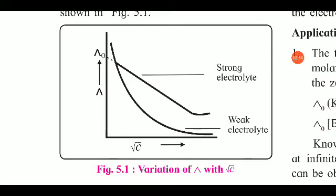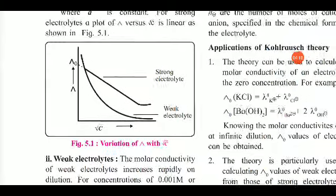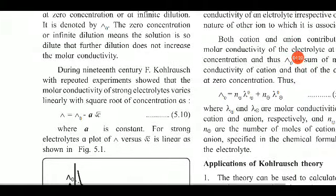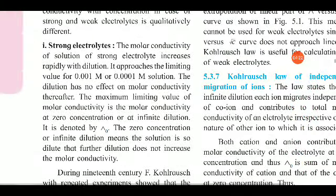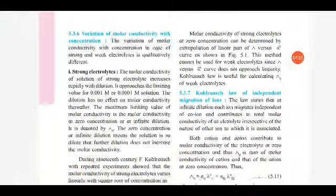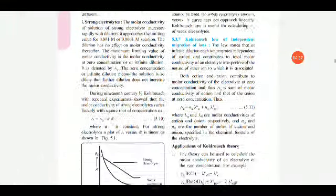For strong electrolytes, the curve intersects the y-axis, and the point of intersection is called lambda zero. Lambda zero is the molar conductance at infinite dilution, or at zero concentration. This is the meaning of the graph plotted here. Both the theoretical explanations for strong and weak electrolytes will be discussed.